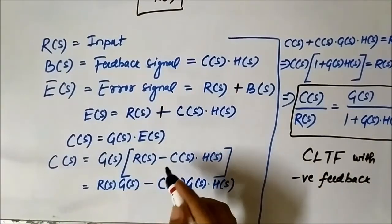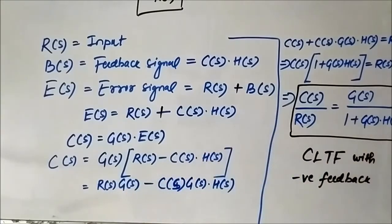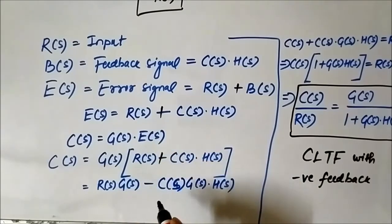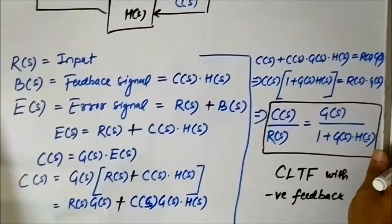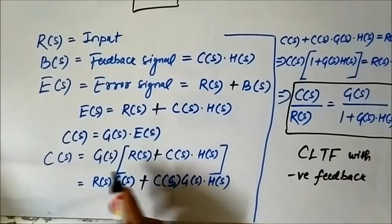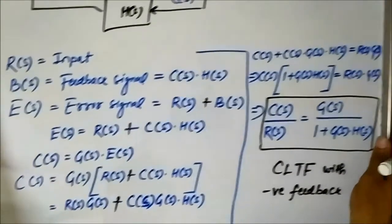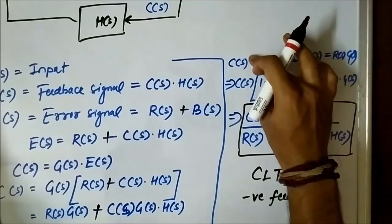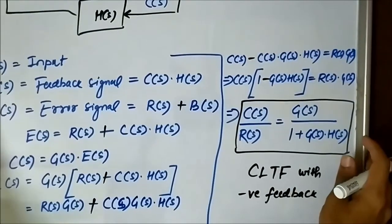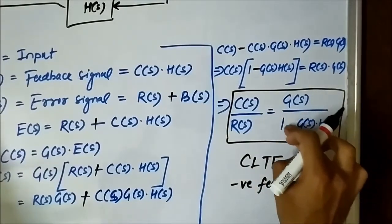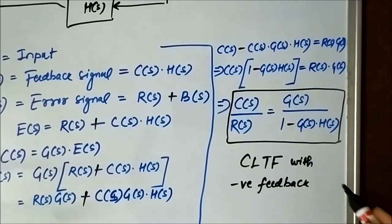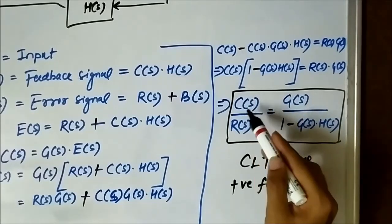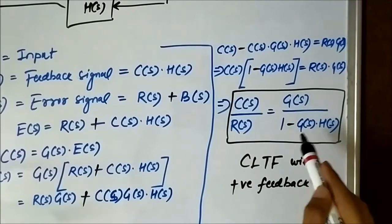Following through the same algebra with E(s) = R(s) + C(s)·H(s): C(s) = G(s)·[R(s) + C(s)·H(s)]. All the minus signs become plus, and when we take C(s)·G(s)·H(s) to the left-hand side the plus becomes minus. So we get C(s)·[1 − G(s)·H(s)] = G(s)·R(s), giving C(s)/R(s) = G(s)/[1 − G(s)·H(s)] for the positive feedback case.